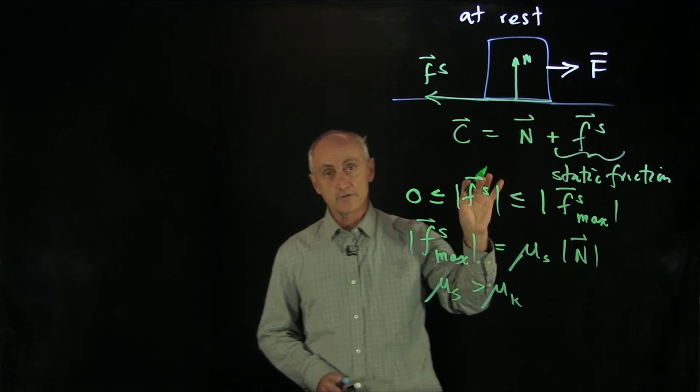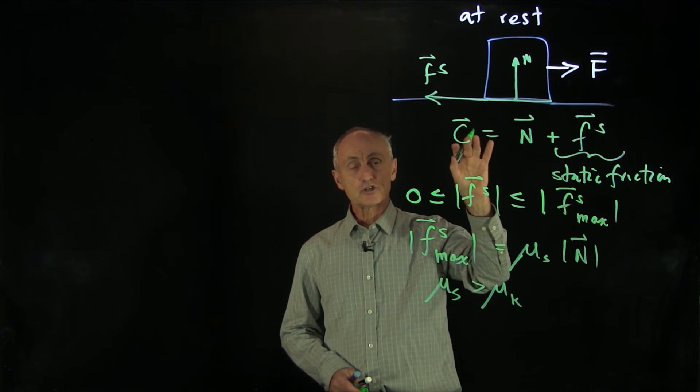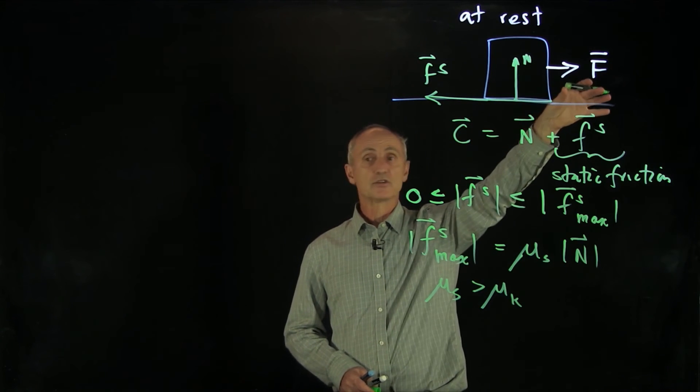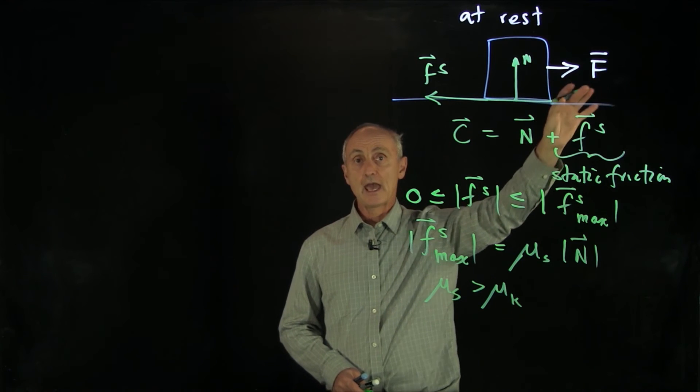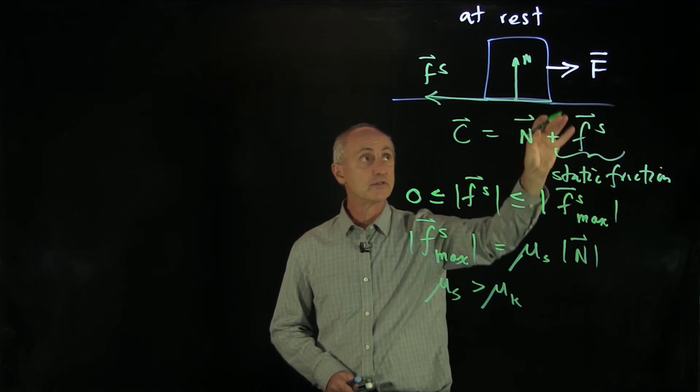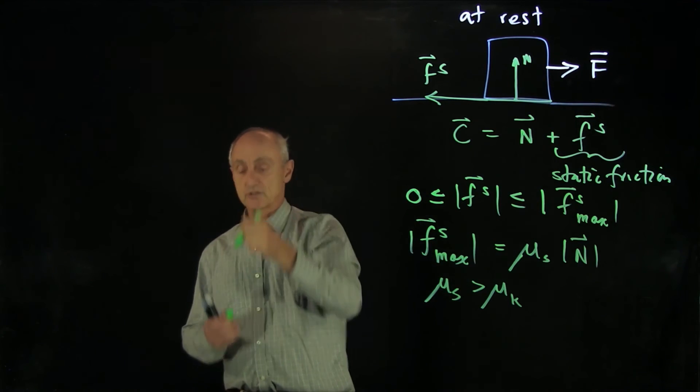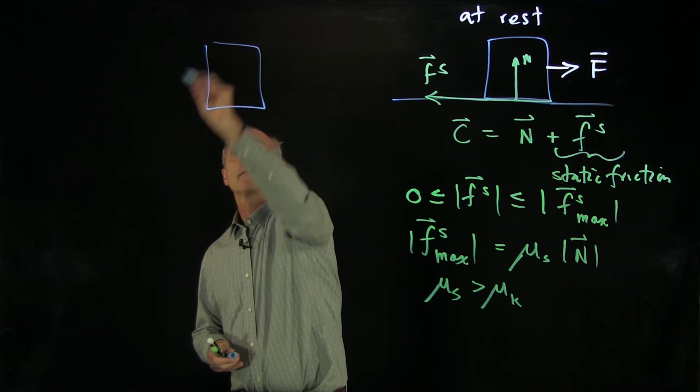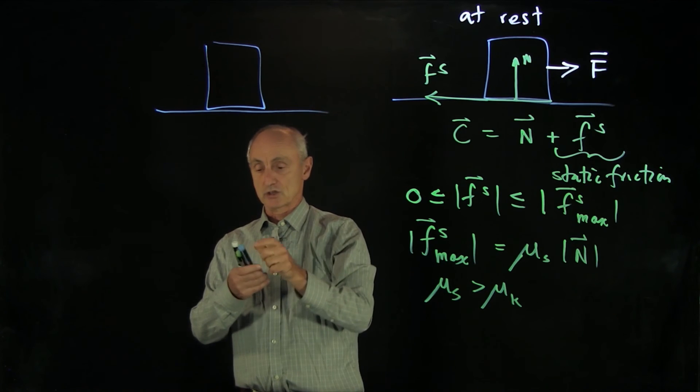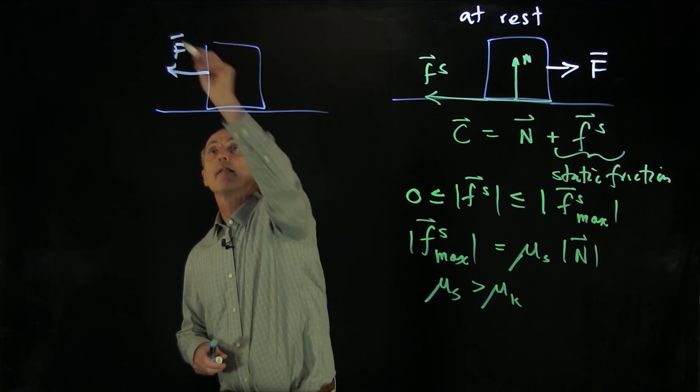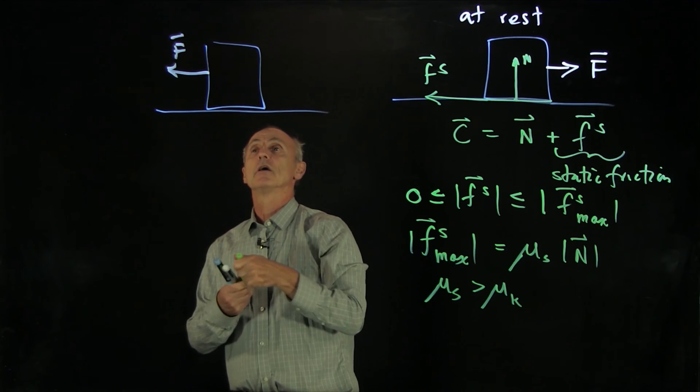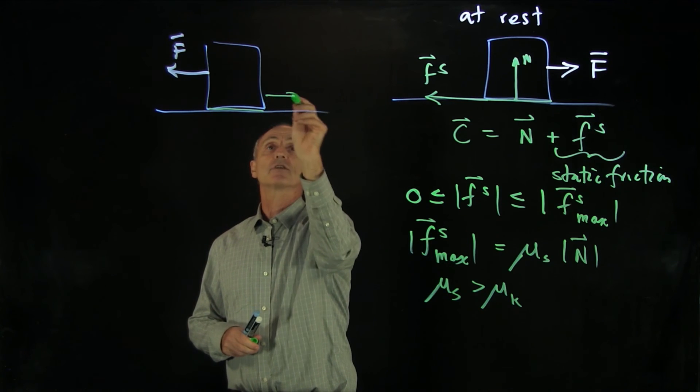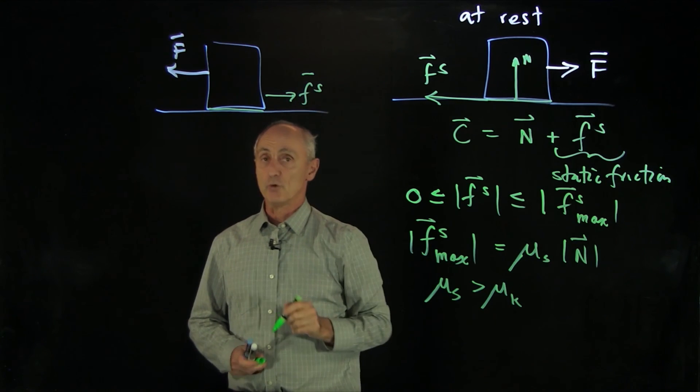Now, again, like kinetic friction, static friction is opposing this external force. And depending on the direction that the object moves, for instance, if we applied the external force in the opposite direction here, then the static friction that's distributed over the surface is opposing that force.